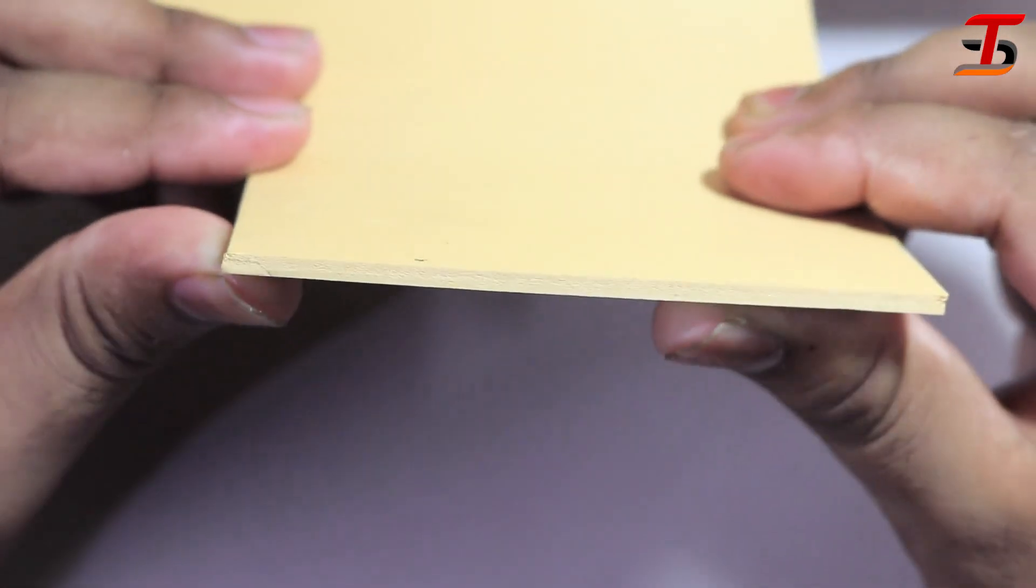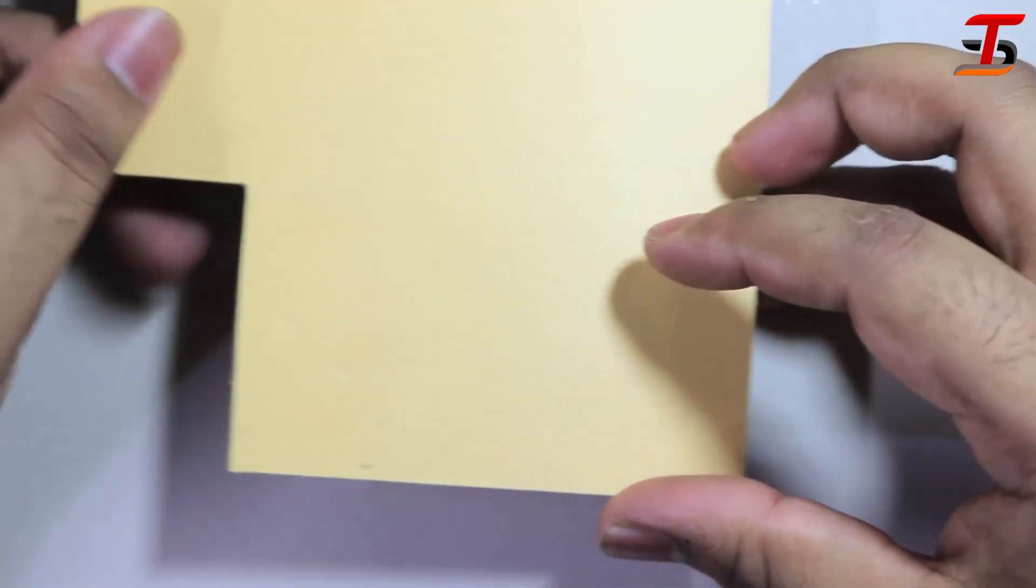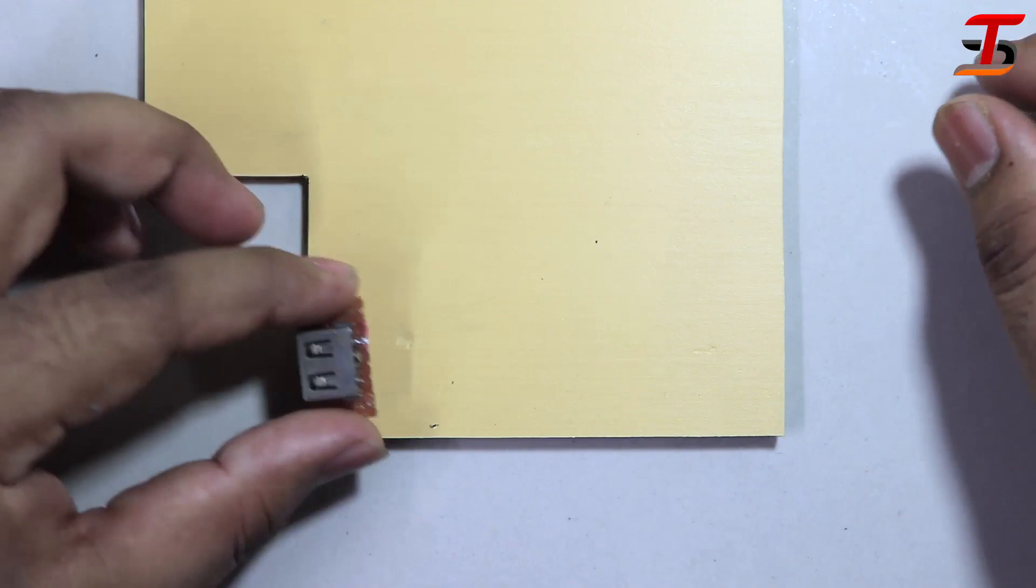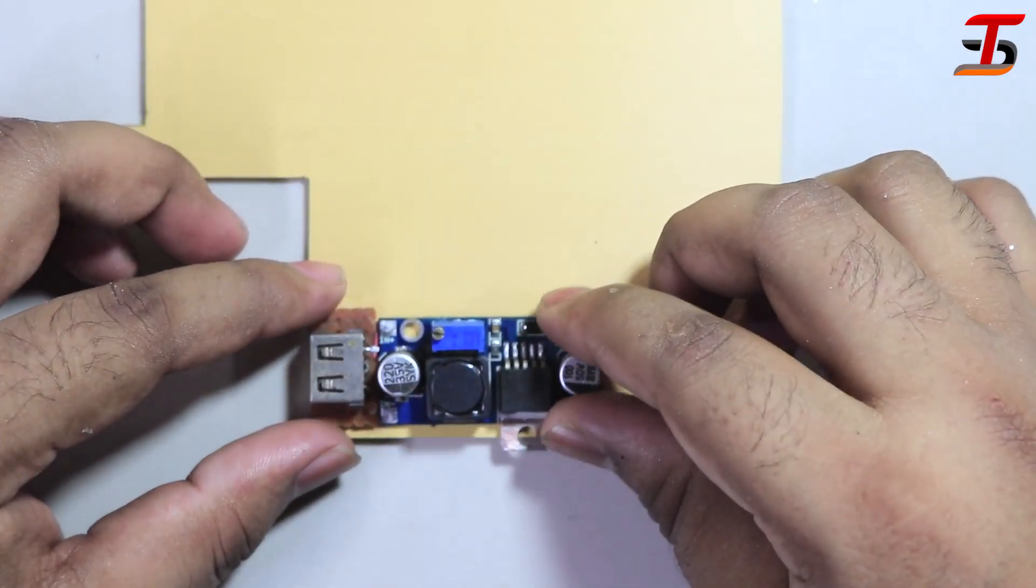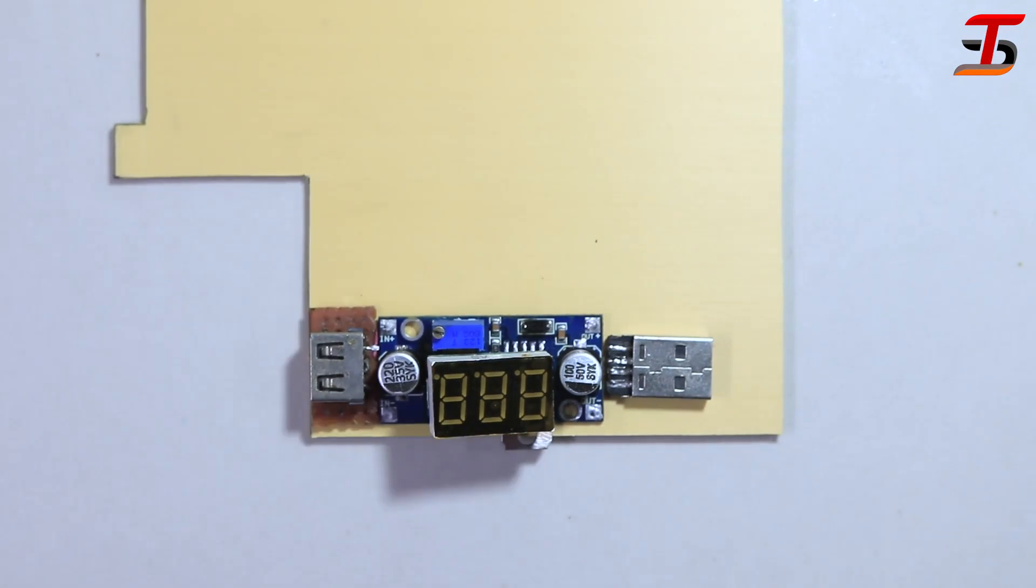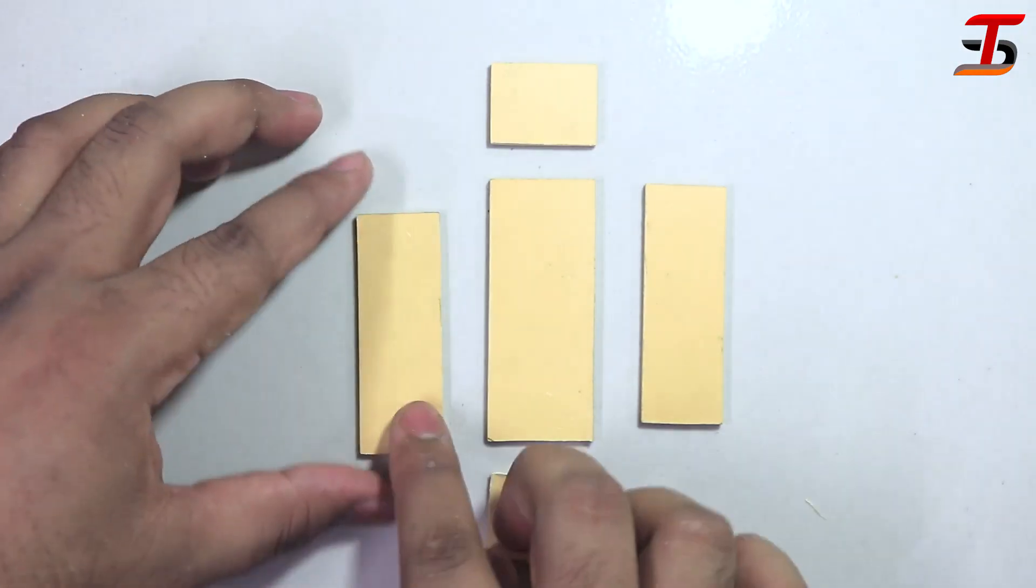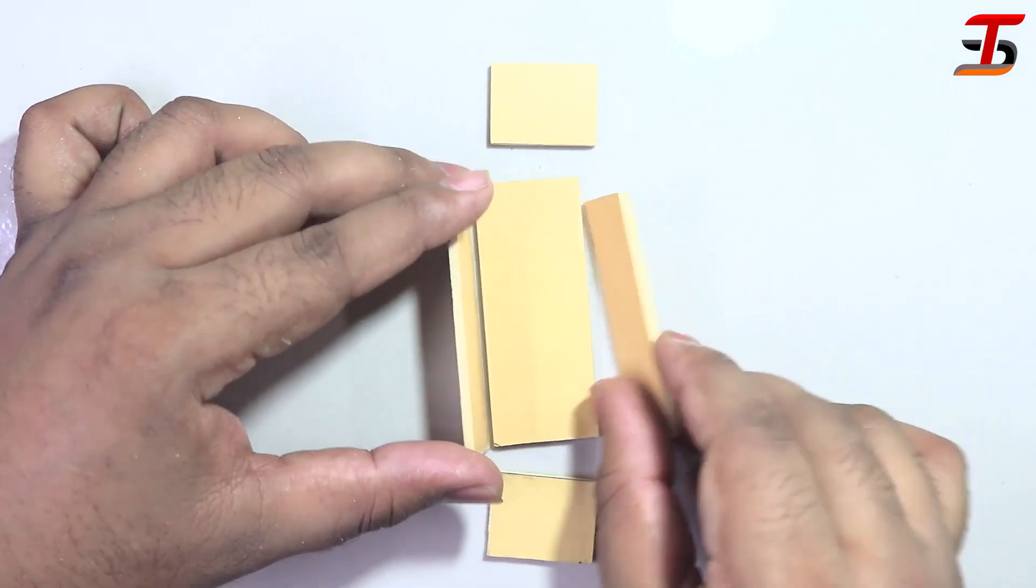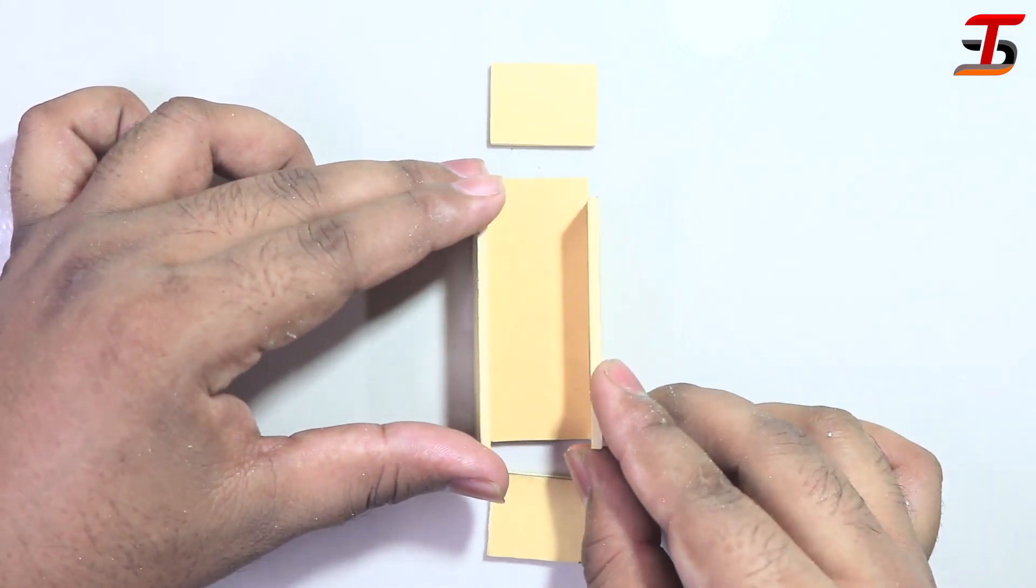I will make this frame with this PVC board. Because it's so easy to cut. I am measuring the bottom part. Then, I cut all other parts. It will be like this.